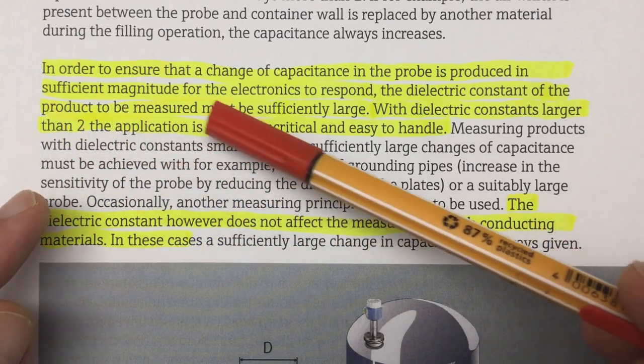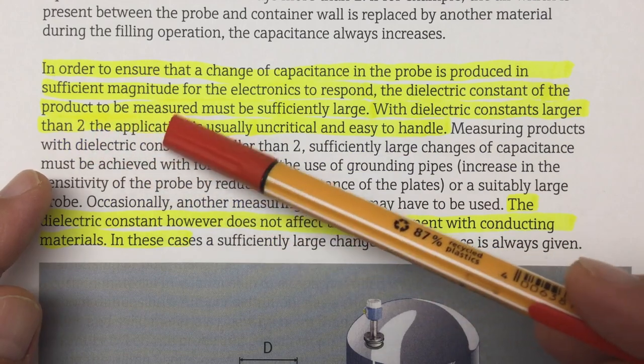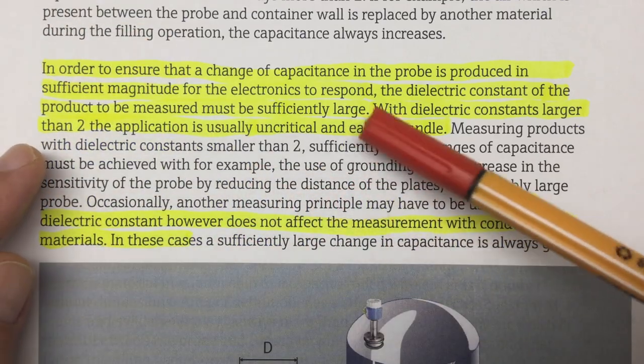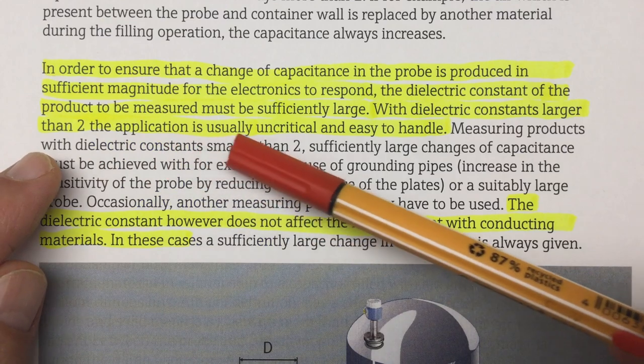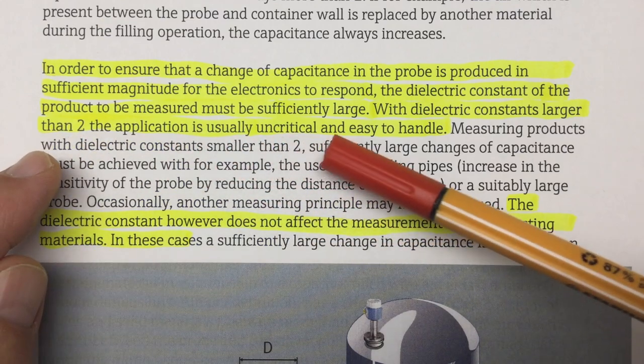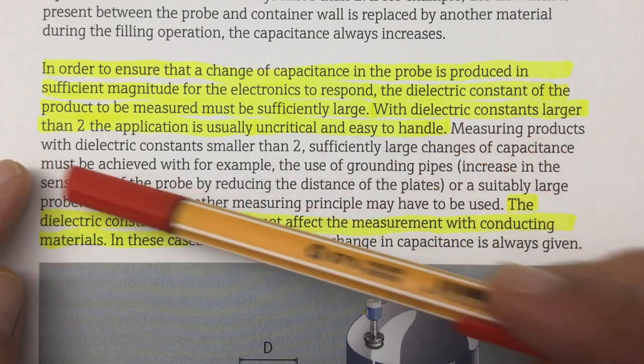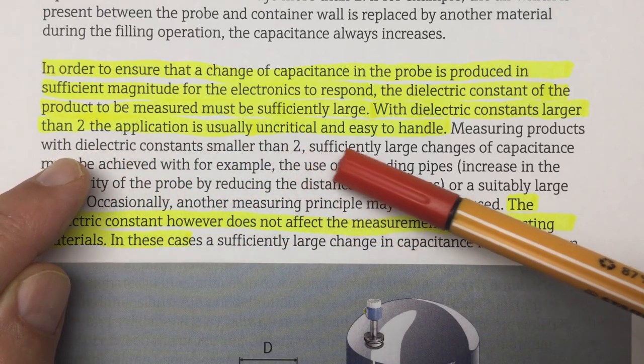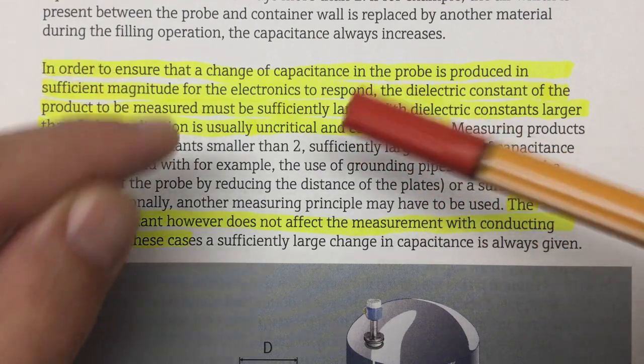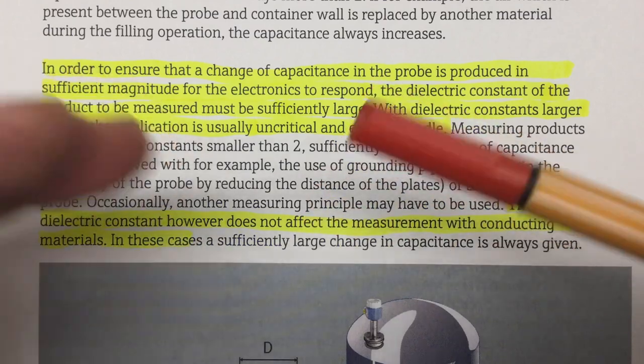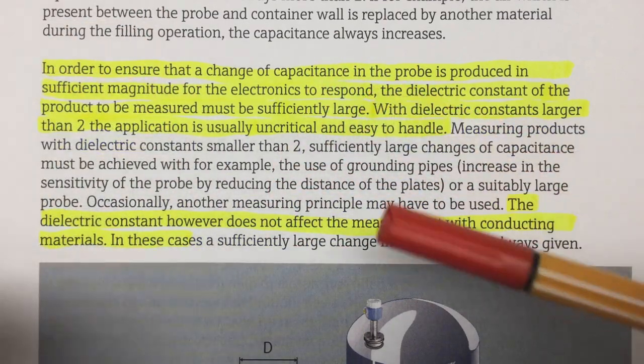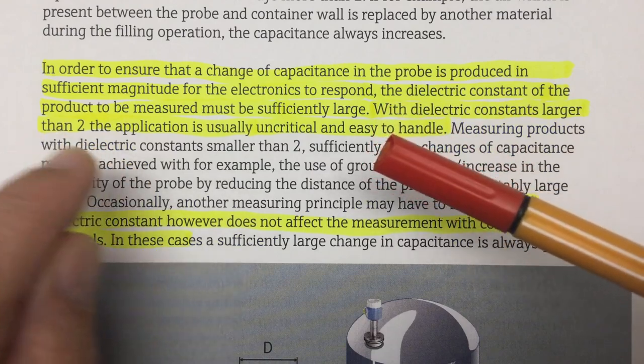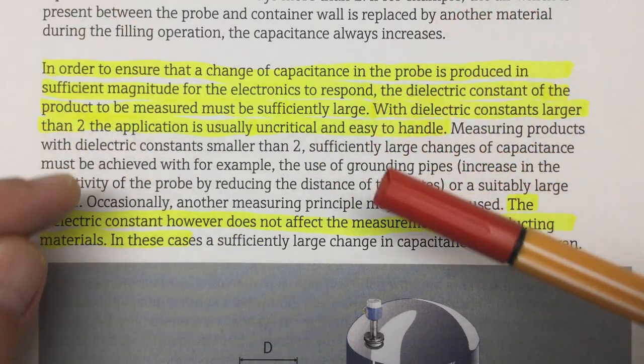However, the effect is known in the industry. I have here a paper from Endress and Hauser, a company specializing in making sensors for automation. It's called the dielectric constant DC value compendium. I put a link into the description. And at page five of that paper, you find this paragraph. It starts off talking about the dielectric constant. In order to ensure that a change of capacitance in the probe is produced in sufficient magnitude for the electronics to respond, the dielectric constant of the product to be measured must be sufficiently large. With dielectric constants larger than two, diesel for example is 2.1, the application is usually uncritical and easy to handle.